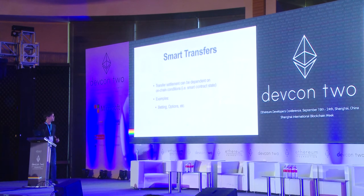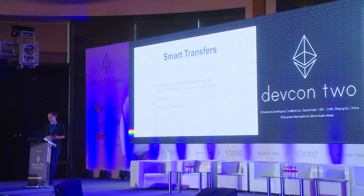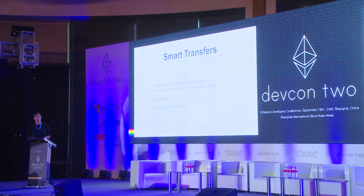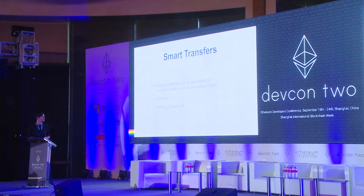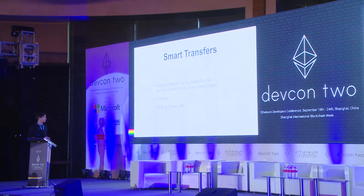Something else we can do is so-called smart transfers. These are transfers which can only be settled on the blockchain if a certain condition on the blockchain is true — that could be the outcome from an oracle or the last price from an on-chain exchange — and then you can build more advanced applications on Raiden like betting or financial derivatives.